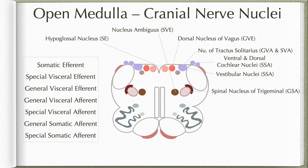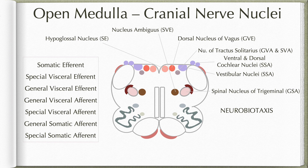As you notice, the nucleus ambiguus will have moved forward to stay close to its sensory source, that is the spinal nucleus of the trigeminal. This movement of motor neurons to stay close to their sensory source is known as neurobiotaxis. This phenomenon is seen in all the nuclei which represent the special visceral efferent column. We will see the same phenomenon in relation to the facial nerve nucleus in the pons and also in the case of the trigeminal nucleus, which is close to the trigeminal sensory nuclei there.